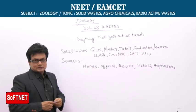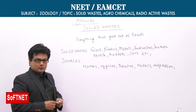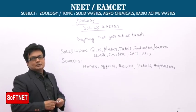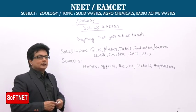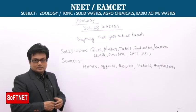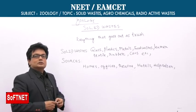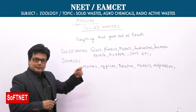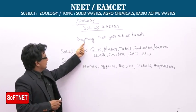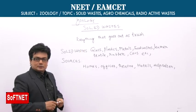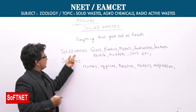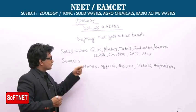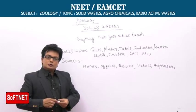Let's see the sources for all this: homes, offices, theaters, hotels, hospitals — all these are the channels or sources for solid waste. So, to re-understand the idea: everything that goes out as trash is solid waste, and these are the sources for it.